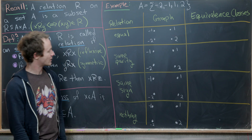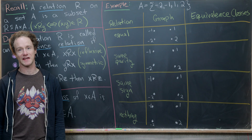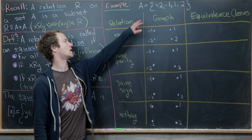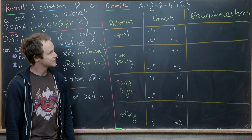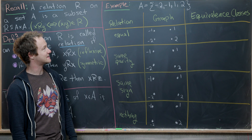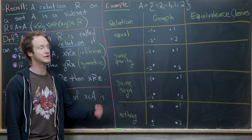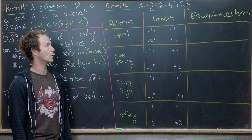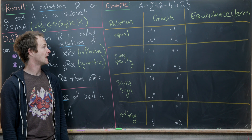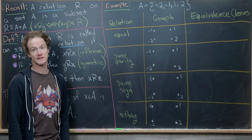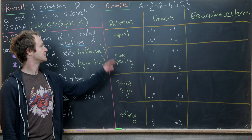The equivalence class is generally denoted by square brackets around x, called the equivalence class of x, although there are different notations. We want to look at four quick examples of equivalence relations on the same set: the set containing the integers negative two, negative one, one, and two.